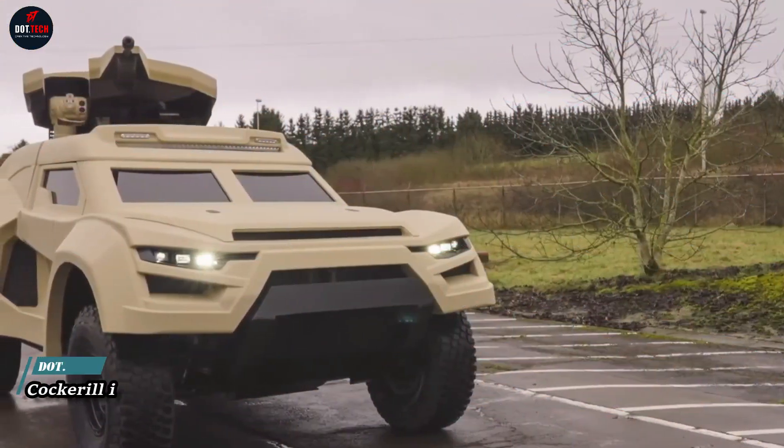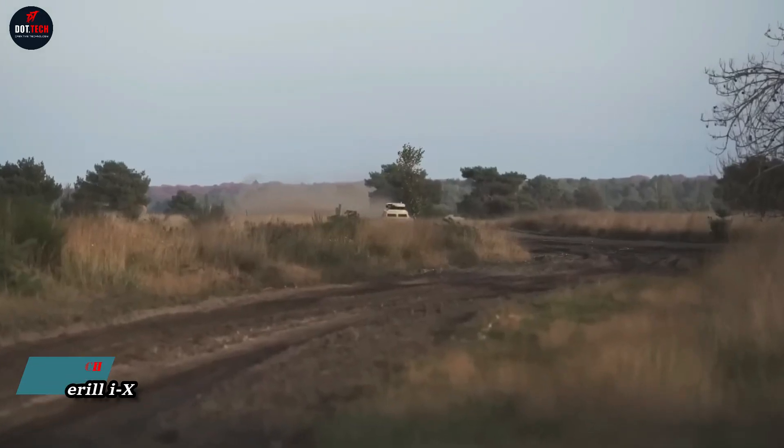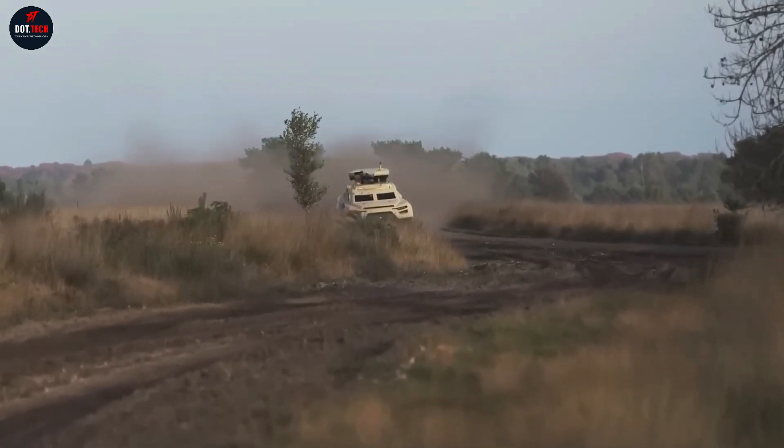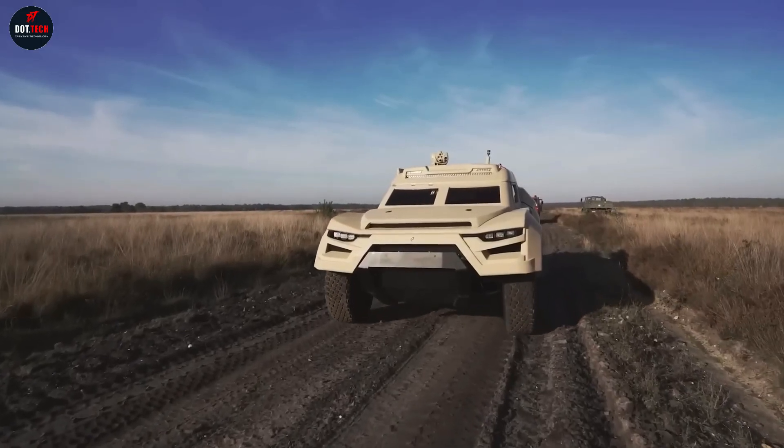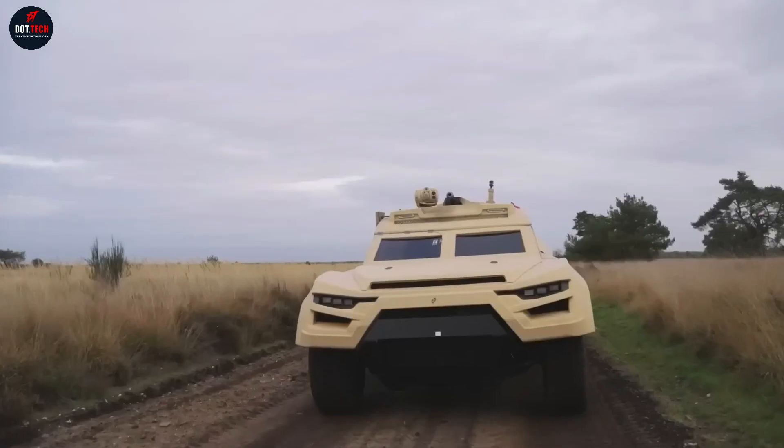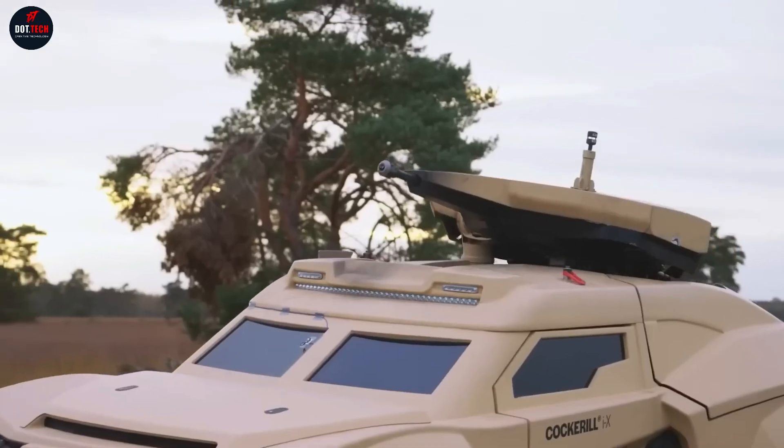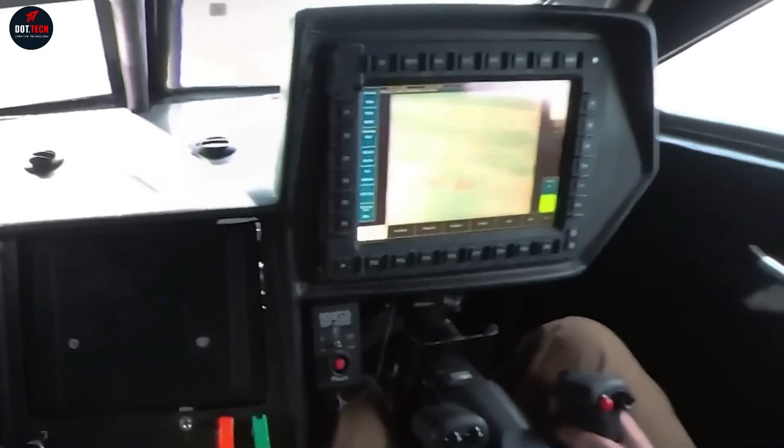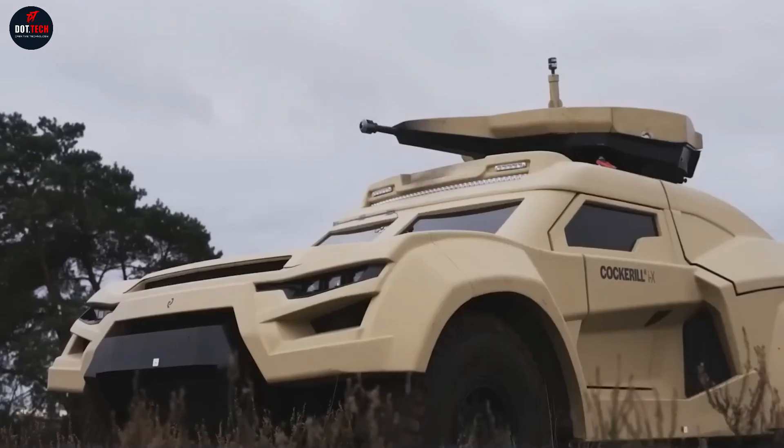The Belgian company John Cockerell has introduced a new generation high-speed light 4x4 wheeled vehicle called Cockerell I-AX, which has already been dubbed a ground interceptor. Here's why. The all-wheel drive vehicle received a universal combat module that can carry automatic cannons of calibre 25 and 30 mm. The vehicle's armament also includes anti-tank missiles and machine guns.